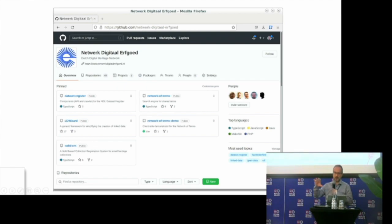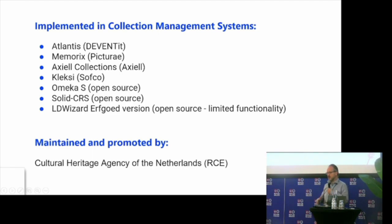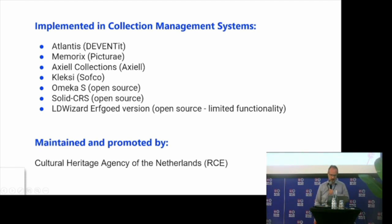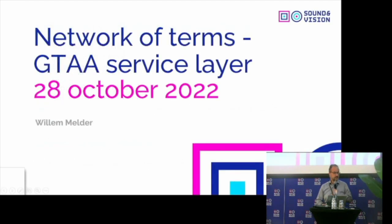It's just defining within a data catalog what the sources are and what the SPARQL queries need to be fired, and you have your own network of terms. There are several vendors who have already implemented this API. So a lot of organizations can already use this functionality, but not all organizations are using it yet, because using terms within a collection management system is something an organization has to decide — understanding why it helps them get better quality and become part of the heritage network. This product is maintained and promoted by the cultural heritage agency in the Netherlands. I'd like to give the floor to William, who's going to talk about one of these term sources.